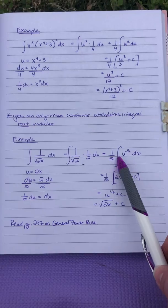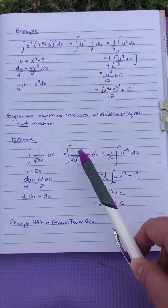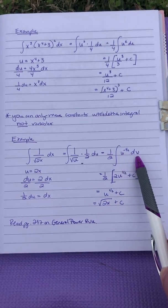All right, so we're going to move this one half to the outside, and I'm going to rewrite this 1 over square root of u as u to the negative one half du.